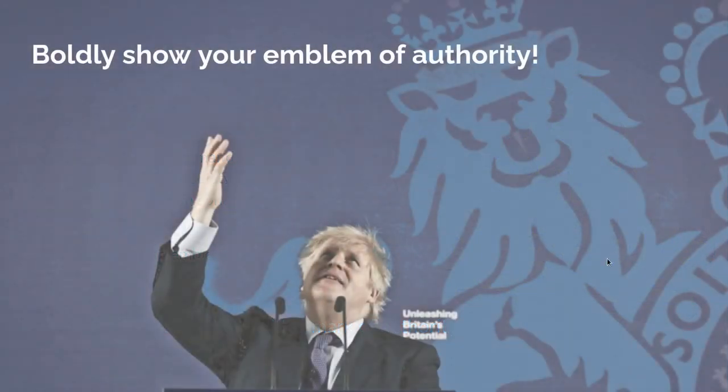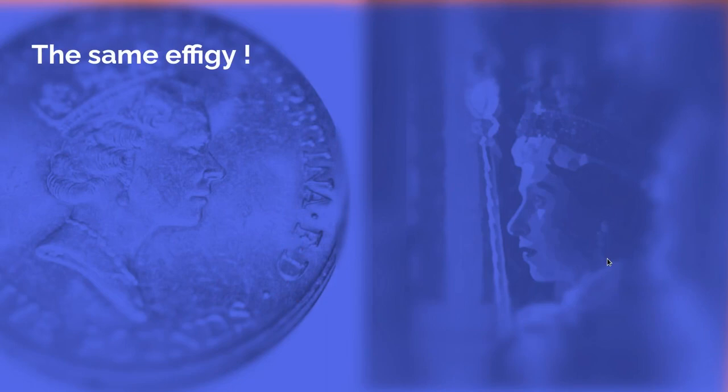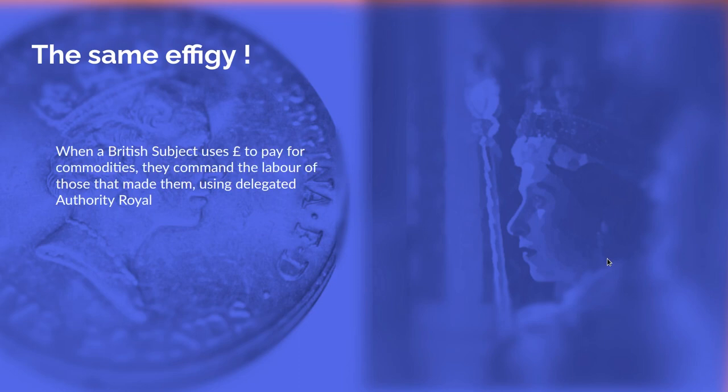We can see here the British Prime Minister boldly displaying his emblem of authority, even though his is just a delegated authority. But it's the same effigy, the same image, on the coins we use. When a British subject uses pounds to pay for commodities, they command the labour of those that made those commodities — and they command it using a delegated royal power, symbolised by the fact that the coins have the royal image on them.